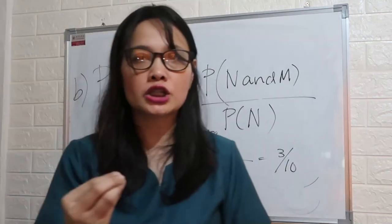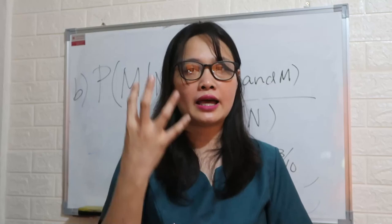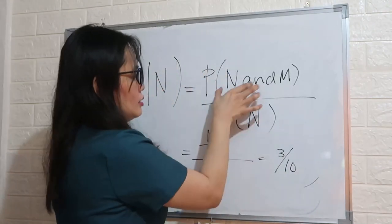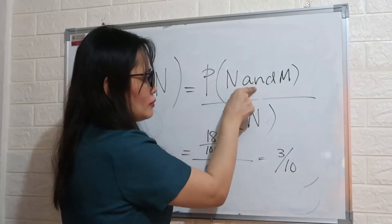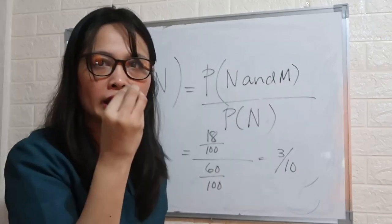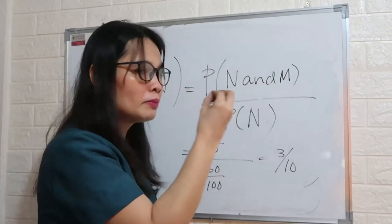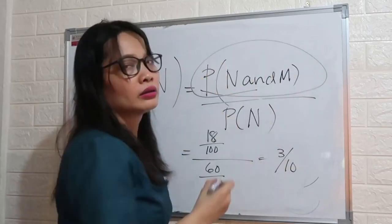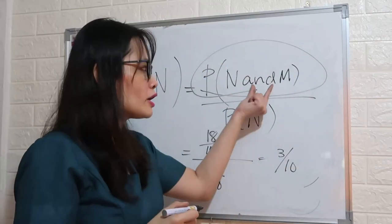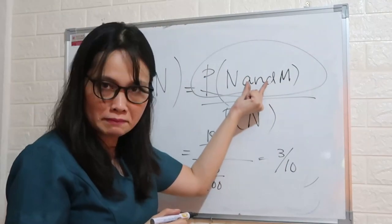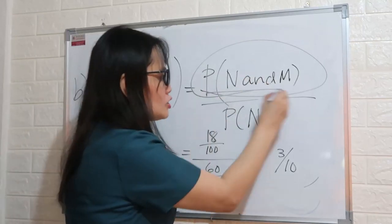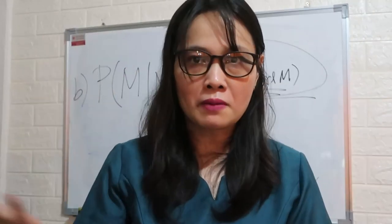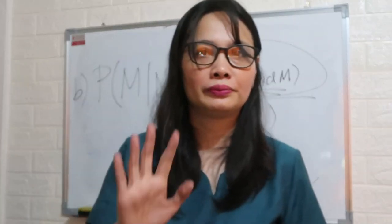That is conditional probability. When we say the probability of answering no at the same time being male — that's the common intersection point. That is conditional probability. Thank you.